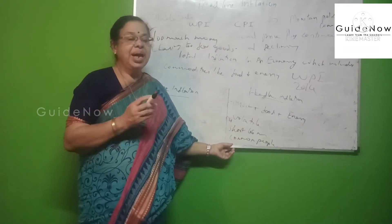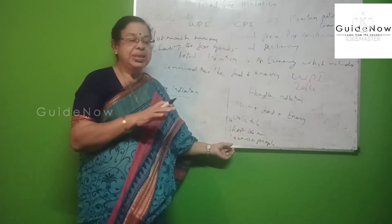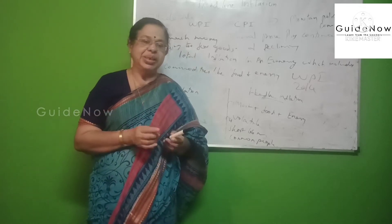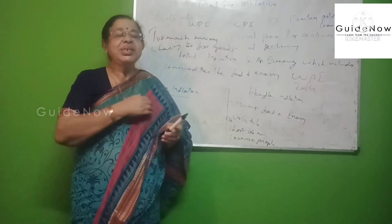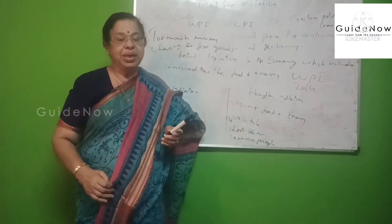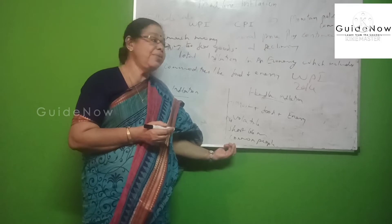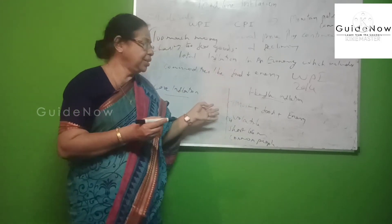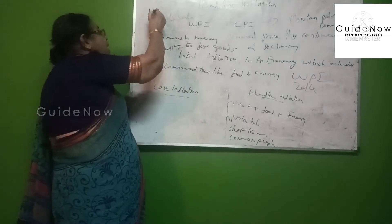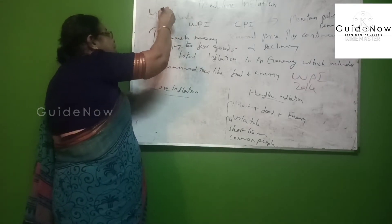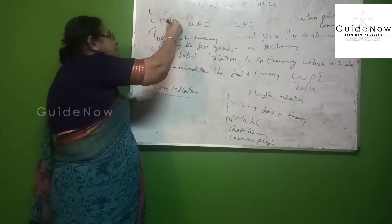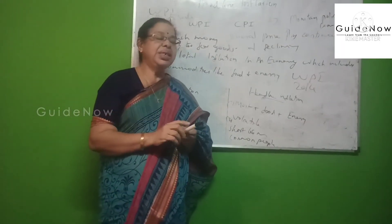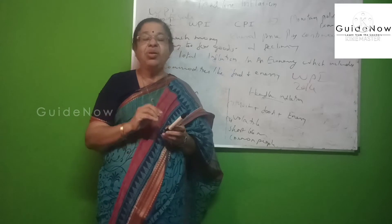Generally, it shows that the general price level is increasing during inflationary situation. Inflation is measured with two important ways: one is the wholesale price index, and another is the consumer price index — that is WPI and CPI. These are the two important measures to measure inflationary tendency.